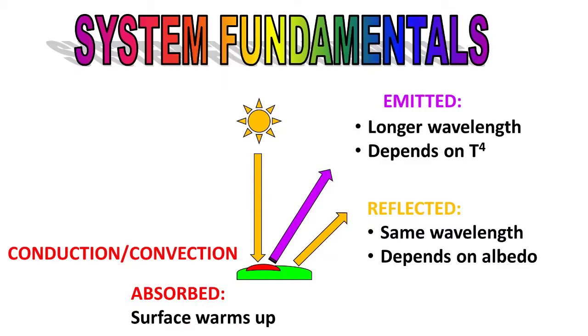At each interaction, a couple of things can happen, and it depends on what it is that these rays are interacting with. When they hit a particle or a gas molecule, some of the radiation will be reflected at the same wavelength. Other aspects of the electromagnetic radiation may be absorbed, and when the energy is absorbed, the internal energy of that particle or gas molecule increases, and because it's greater than zero Kelvin, it then radiates energy. The amount of energy and the wavelength at which it is re-radiated depends on Stefan-Boltzmann's law, which is essentially proportional to the fourth power of temperature. Very well understood.